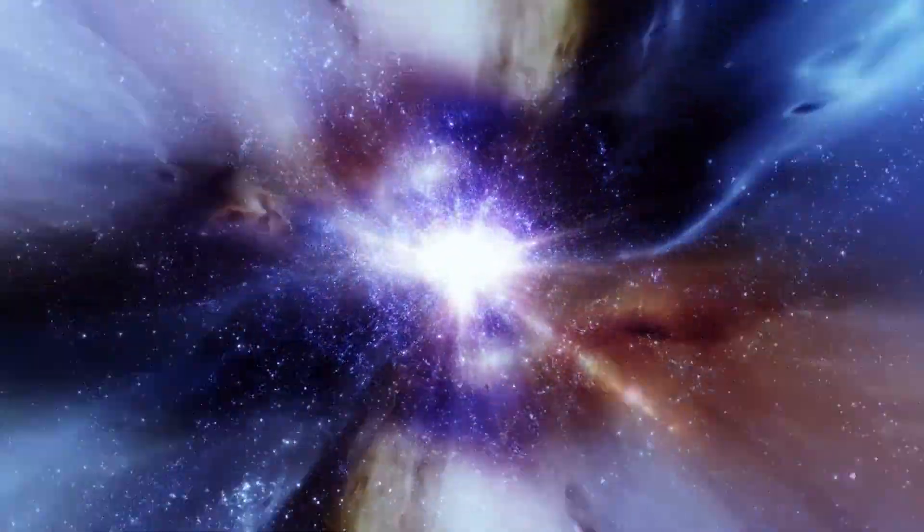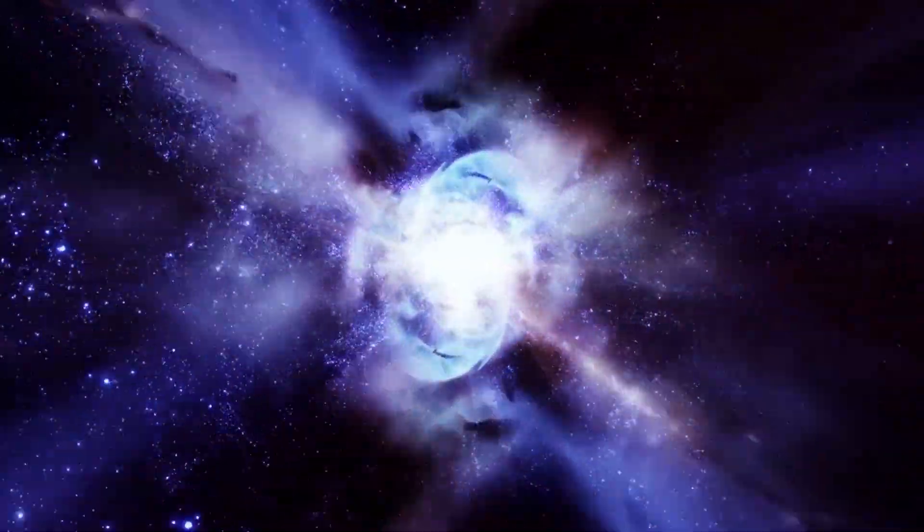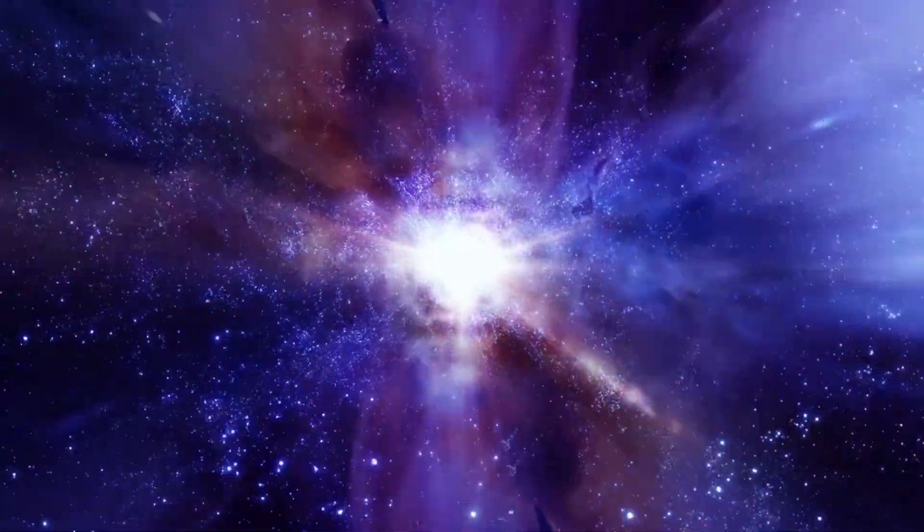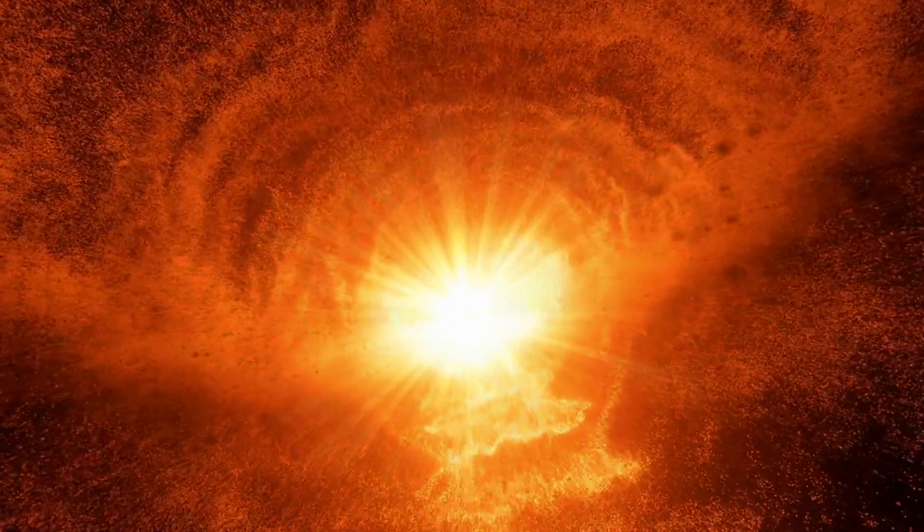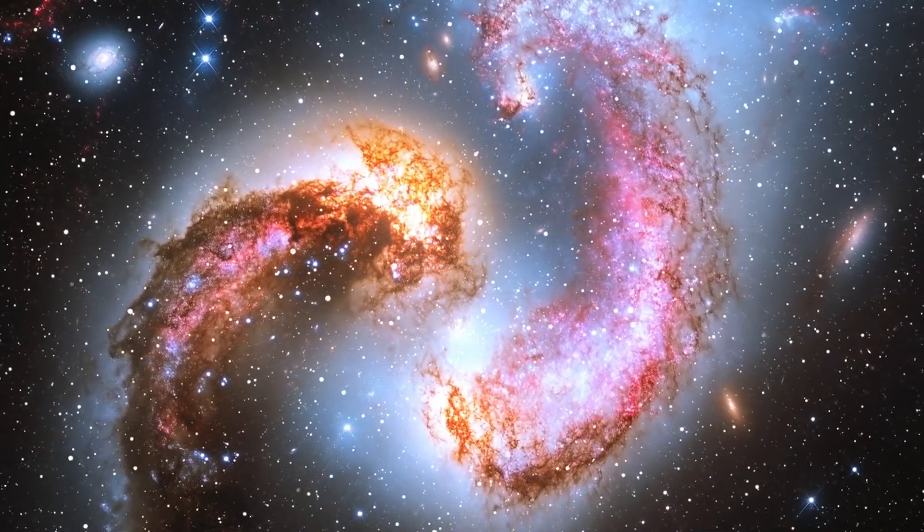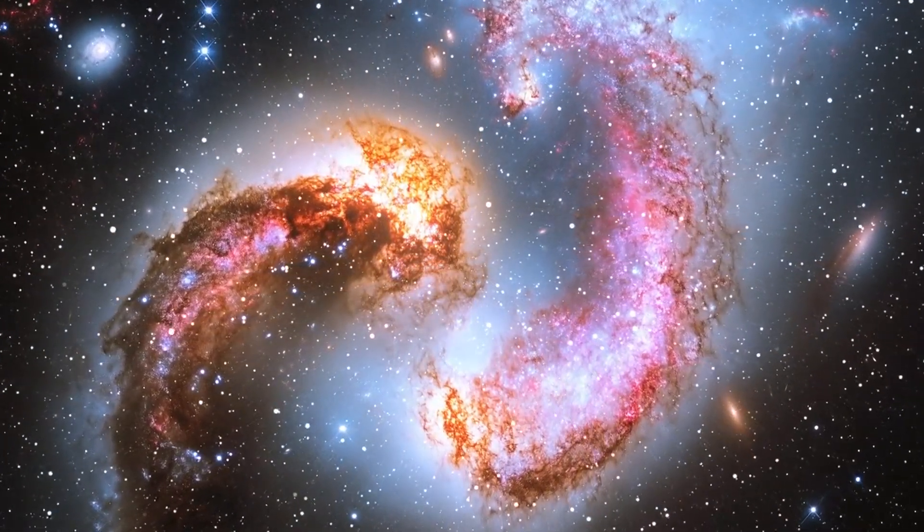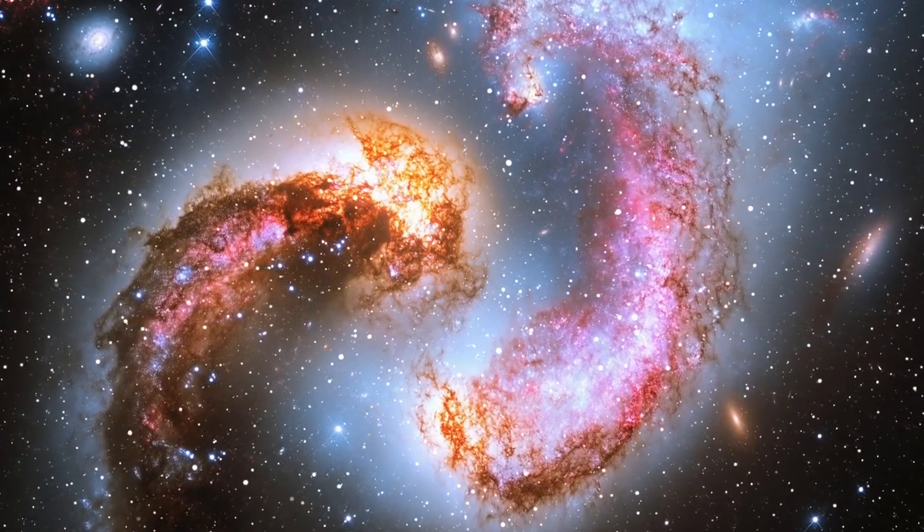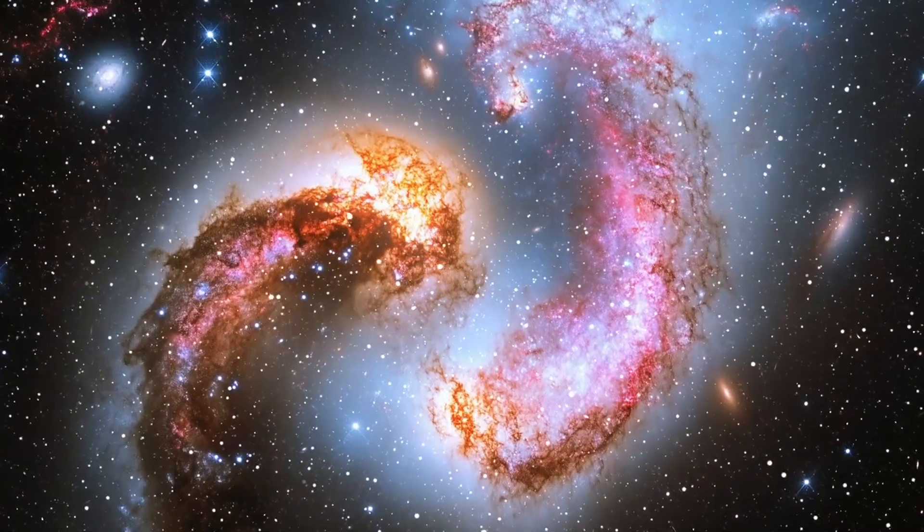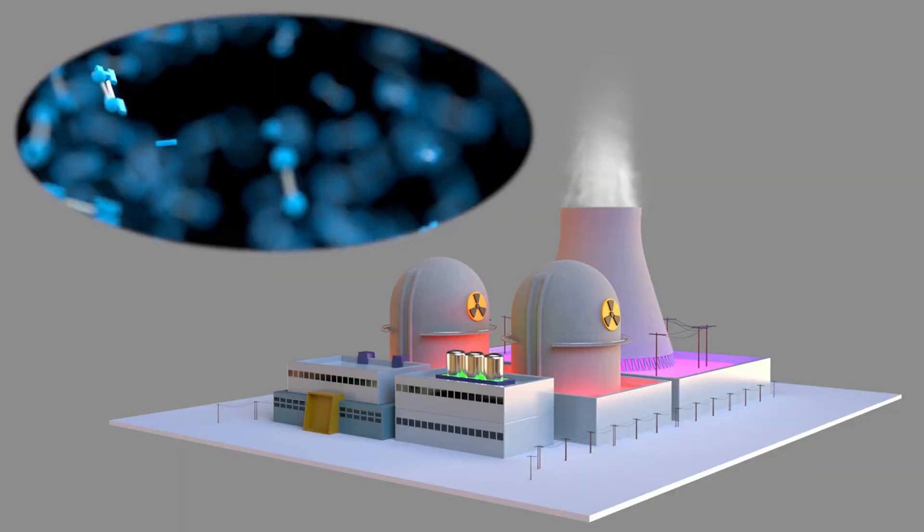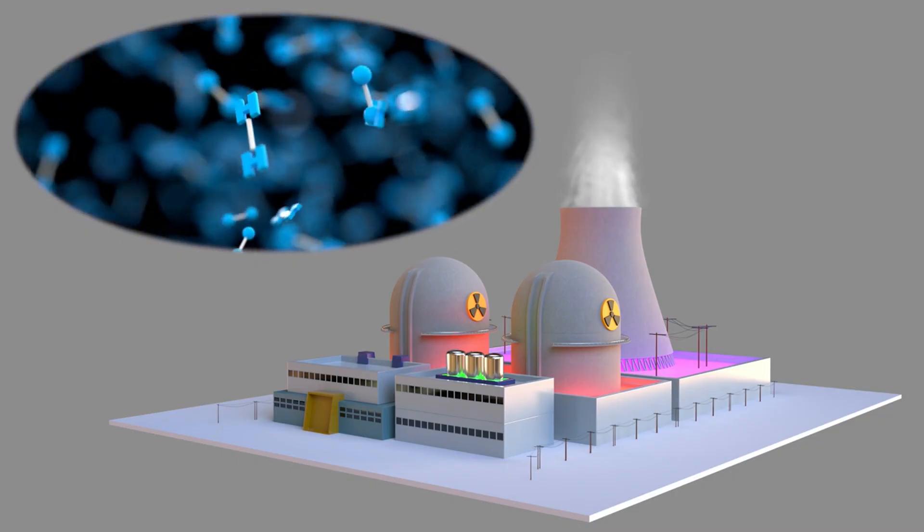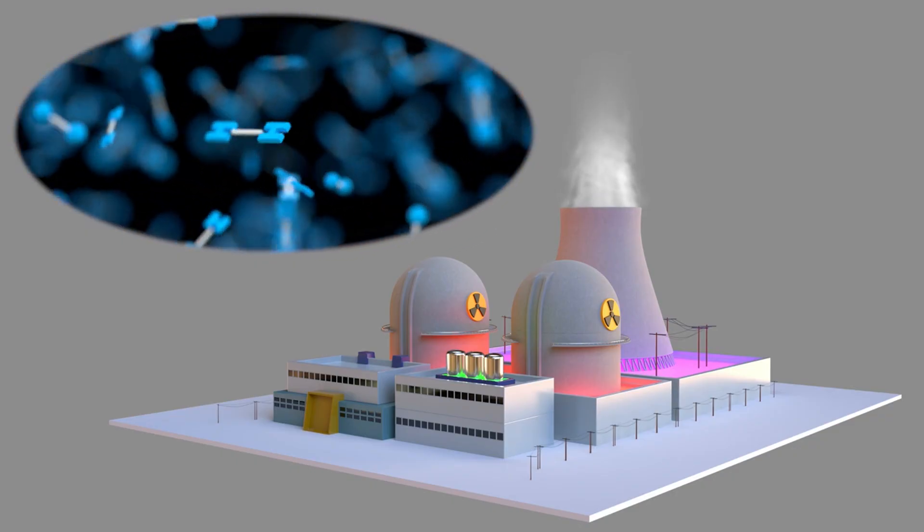When the star finally dies in a proper supernova explosion, this material rich in hydrogen gets hit by the shock wave, causing the incredible brightness we observed. But that's not the only possibility. Another theory suggests that SN 2016aps might actually have been the result of two massive stars that had merged before exploding—a cosmic collision of giants. This would explain the unexpected amount of hydrogen, as the merger would have mixed the star's materials together before the final explosion.